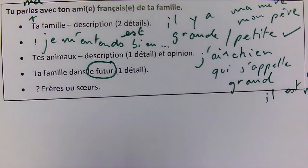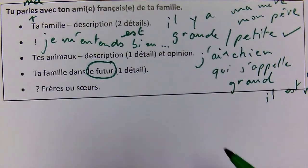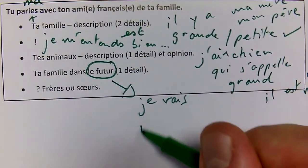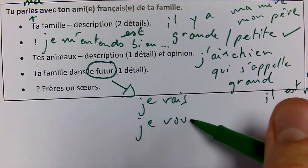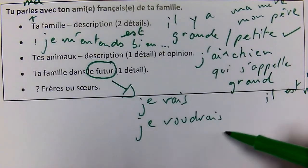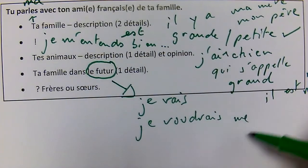Next: 'ta famille dans le futur' — this is important because we get a bit more points. You've got to give one detail about something to do with your family in your future. They're probably going to ask what you want to do in the future, what sort of family you want. You could start with 'je vais' or 'je voudrais' — the conditional. 'Je voudrais' is the one we want. Would you like to be single, have a big family, or get married? So: 'je voudrais me marier' — reflexive again.